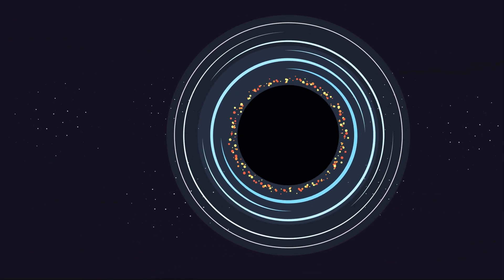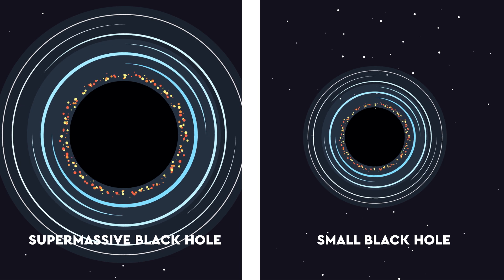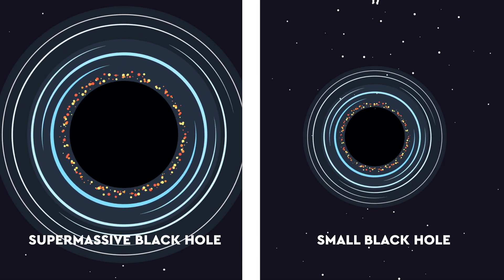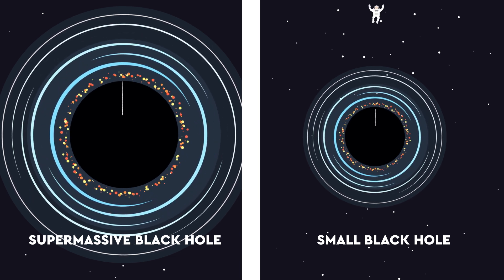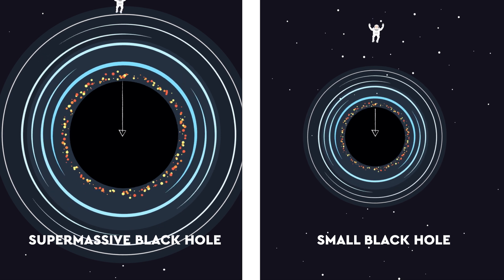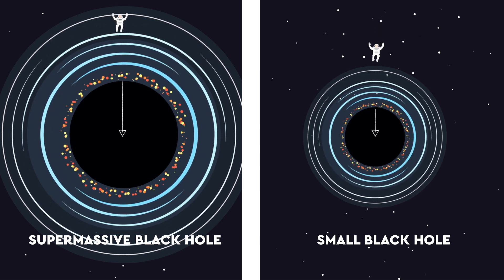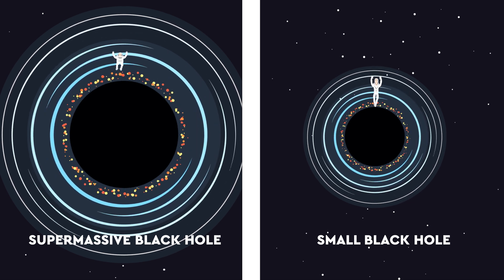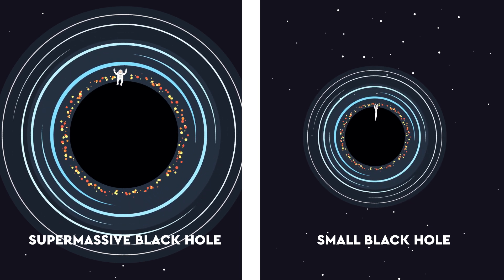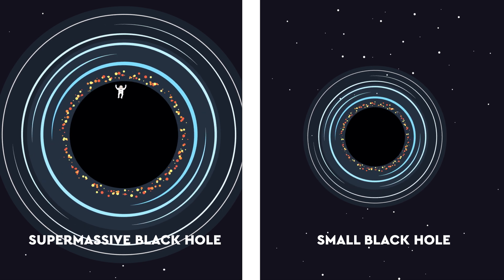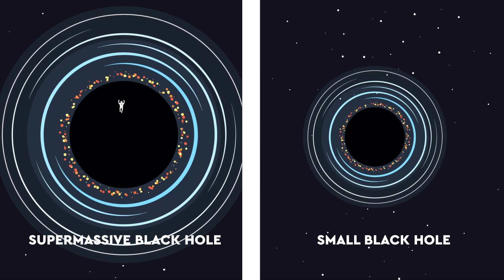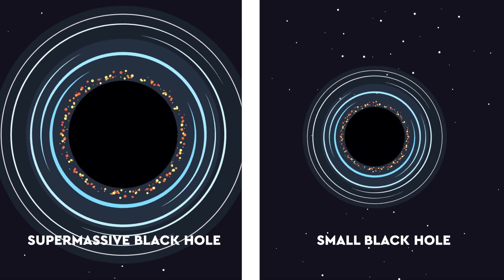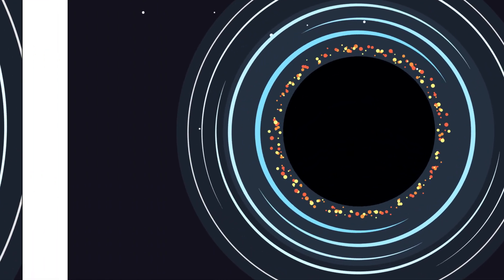Weirdly though, smaller black holes would kill you faster than a supermassive one. This might seem counterintuitive, but with a small black hole you're a lot closer to the singularity, so those tidal forces start to have an effect much earlier. In fact, they could kill you even before you've crossed the event horizon. Oddly, with a supermassive black hole you could cross the event horizon and survive for a while before being turned into a noodle. But that's just one theory about death by black hole.